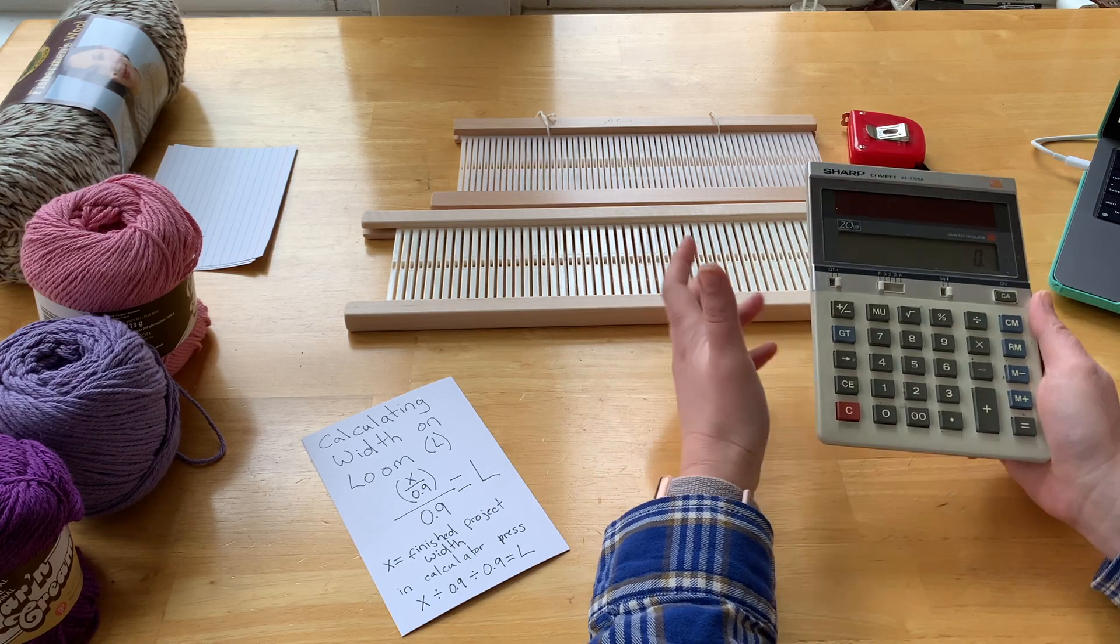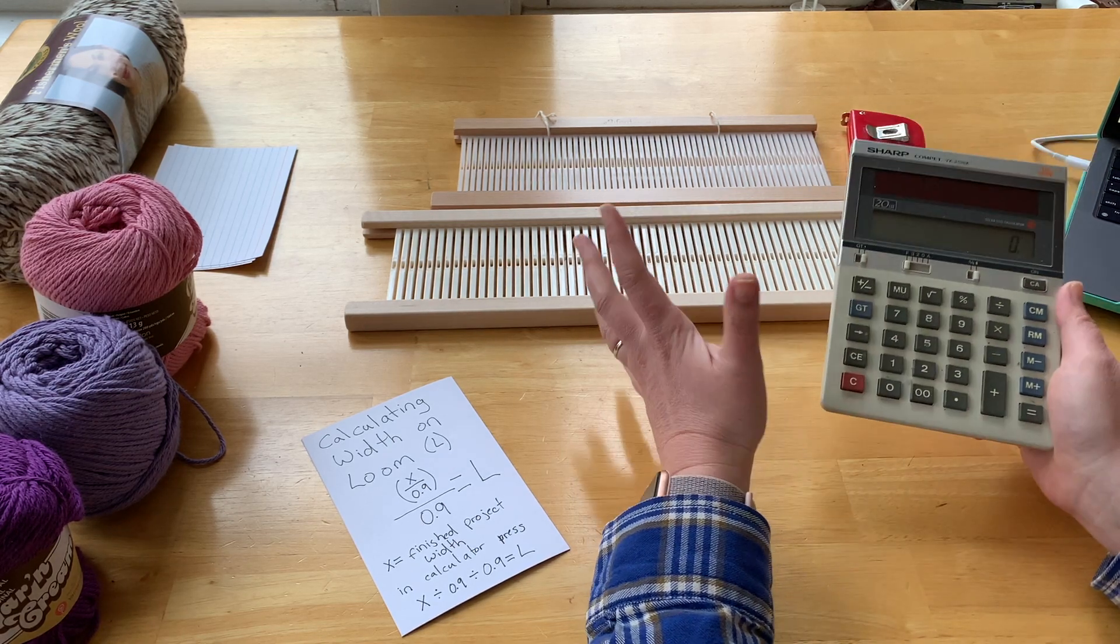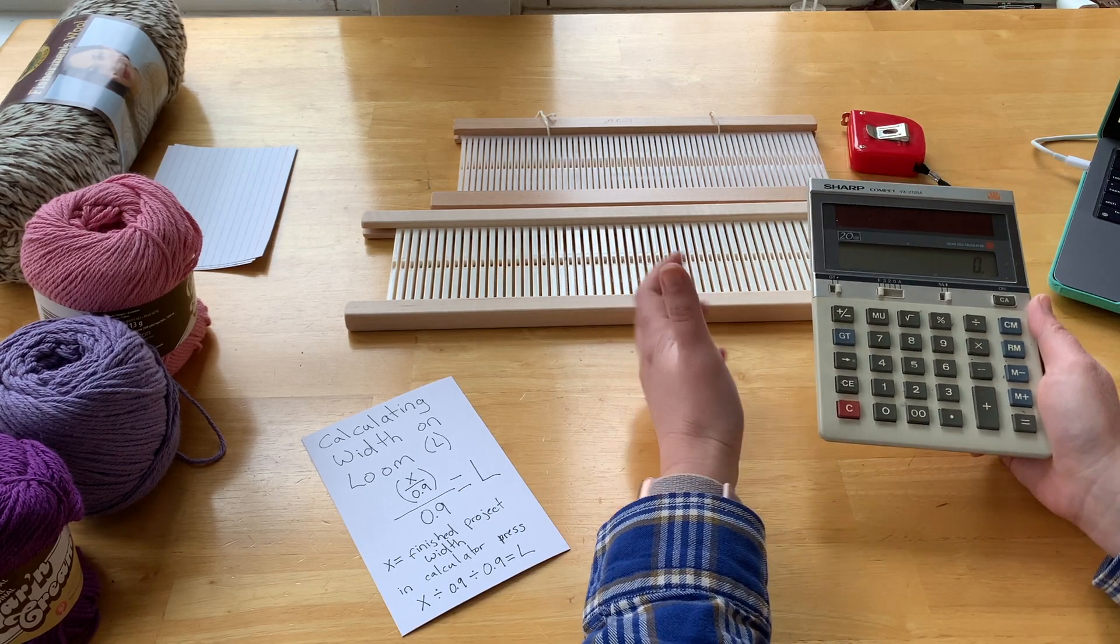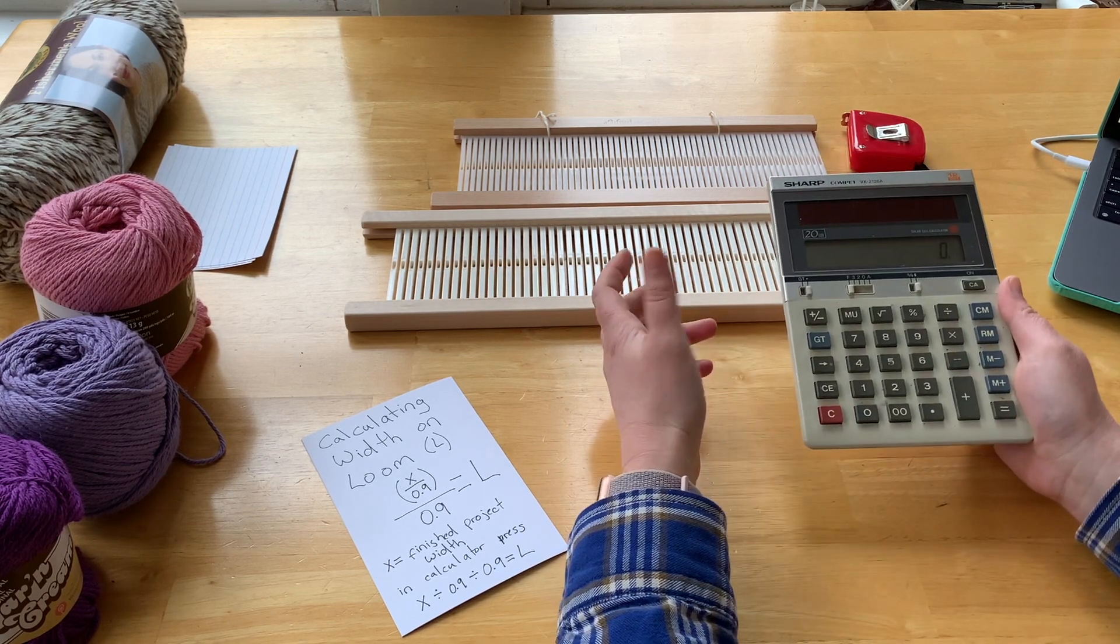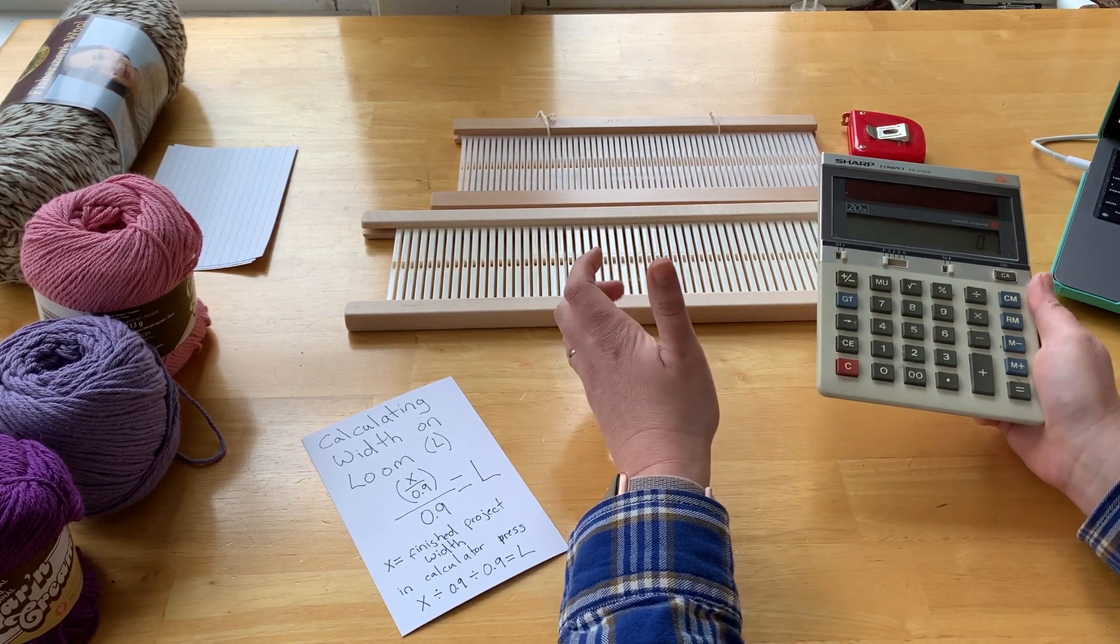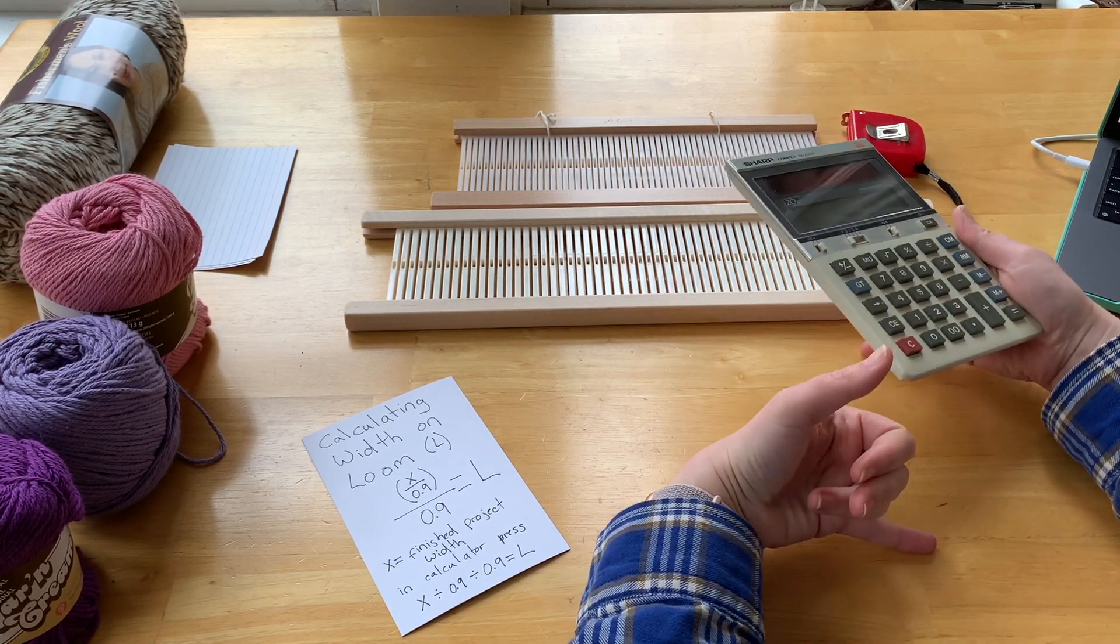So first of all, you have to determine the measurements you want your final project to have. In the case of this tutorial, I want to make a doll-size picnic blanket for my kids, and I want the finish size to be 24 inches wide by 24 inches long.